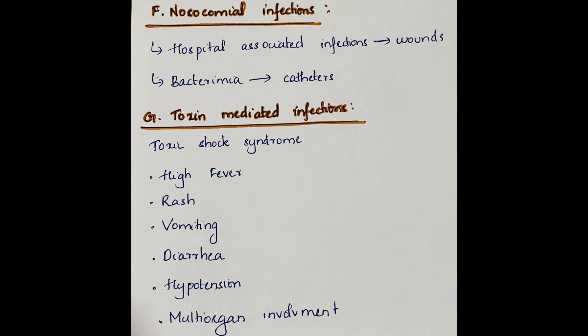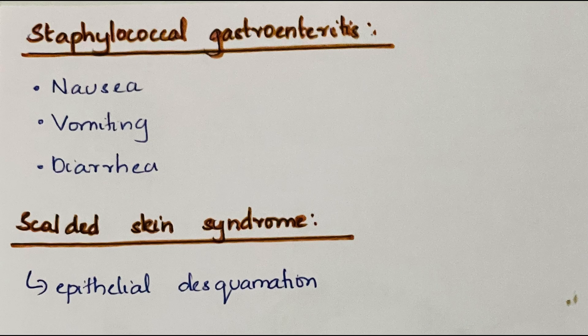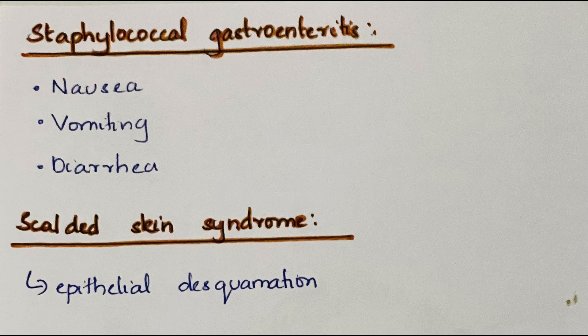Toxin-mediated infections include toxic shock syndrome which shows high fever, rash, vomiting, diarrhea, hypotension, multi-organ involvement. Staphylococcal gastroenteritis results in nausea, vomiting, diarrhea.